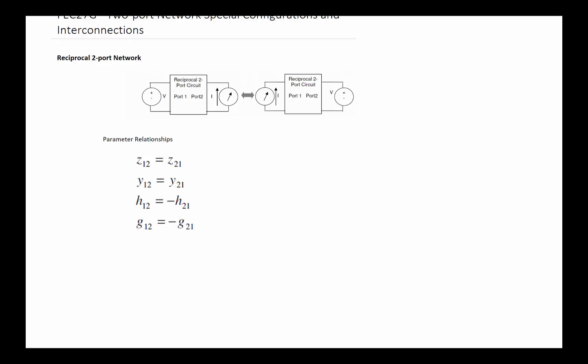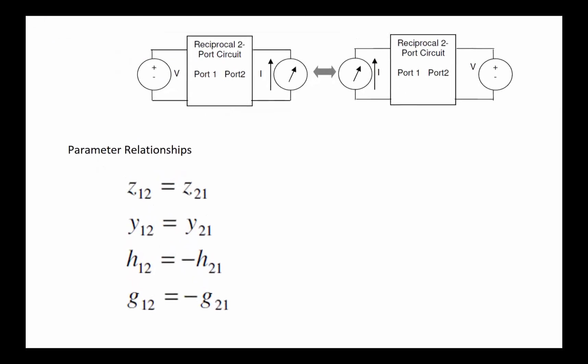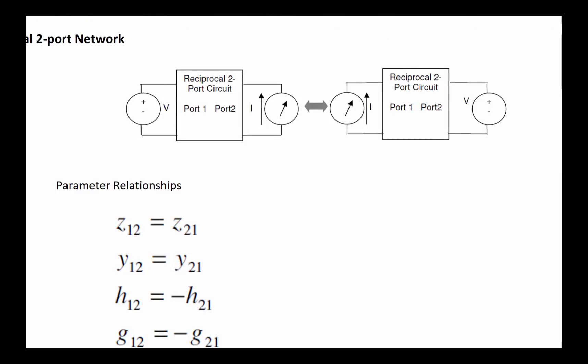Let's start with the reciprocal two-port network. The definition for a reciprocal two-port network simply is that if you were to put a voltmeter on port one and put the ammeter on port two, therefore we will have V1 and I2. Those numbers would be exactly the same if we came to port two and put a V2 and get I1.